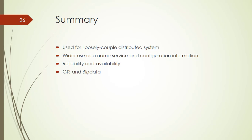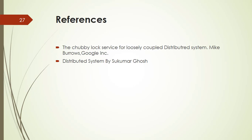This is the summary of the whole presentation. The key points are: first, Chubby is used for loosely coupled distributed systems. Second, it is widely used as a name service and for configuration information. Third, reliability and availability are primary goals. Fourth, it is used in GFS and Bigtable and other big data systems. The references used are: the paper 'The Chubby Lock Service for Loosely-Coupled Distributed Systems' by Mike Burrows from Google, Inc., and the book on distributed systems written by Dr. Sukumar Ghosh.